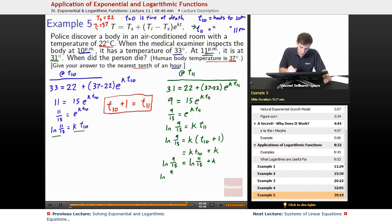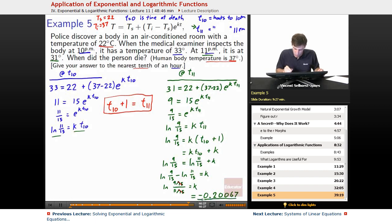We subtract ln(9/15) minus ln(11/15) equals k. Now at this point, we could just punch that into a calculator or we could remember the properties that we know if we want to do a little bit less in our calculator. So that's ln(9/15 divided by 11/15). So since we're dividing by 15 on the top and the bottom, they cancel out and we're left with ln(9/11) is equal to k. We take the natural log of 9 divided by 11 in our calculators and we wind up getting -0.20067 as our constant for k.